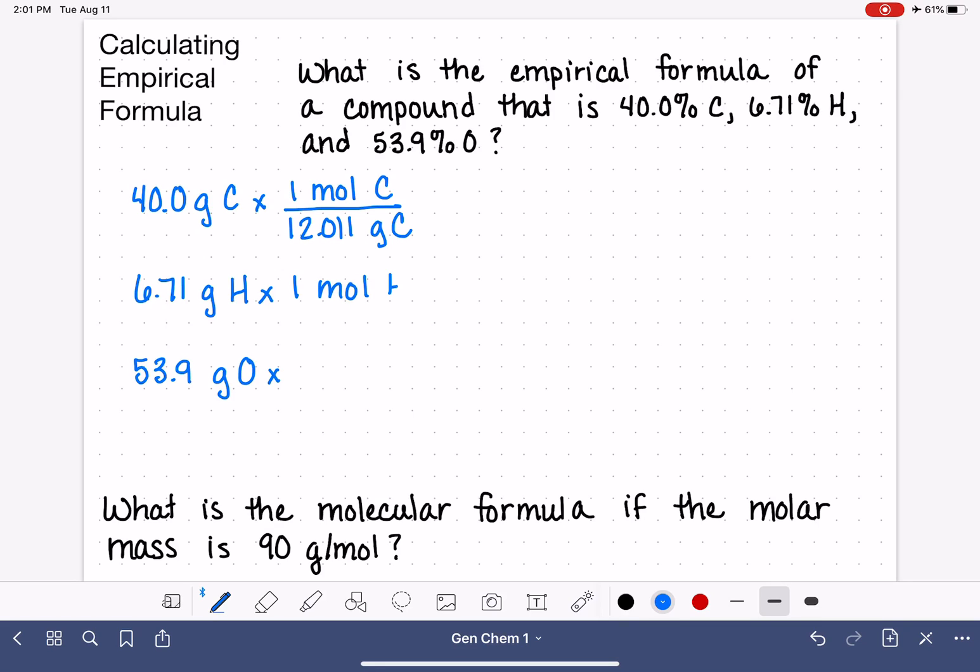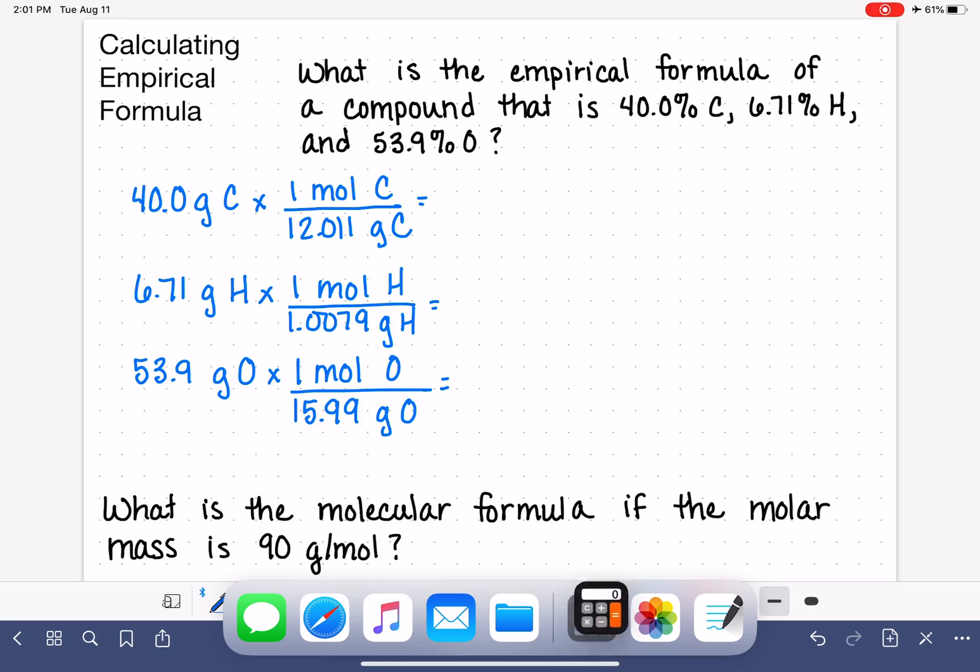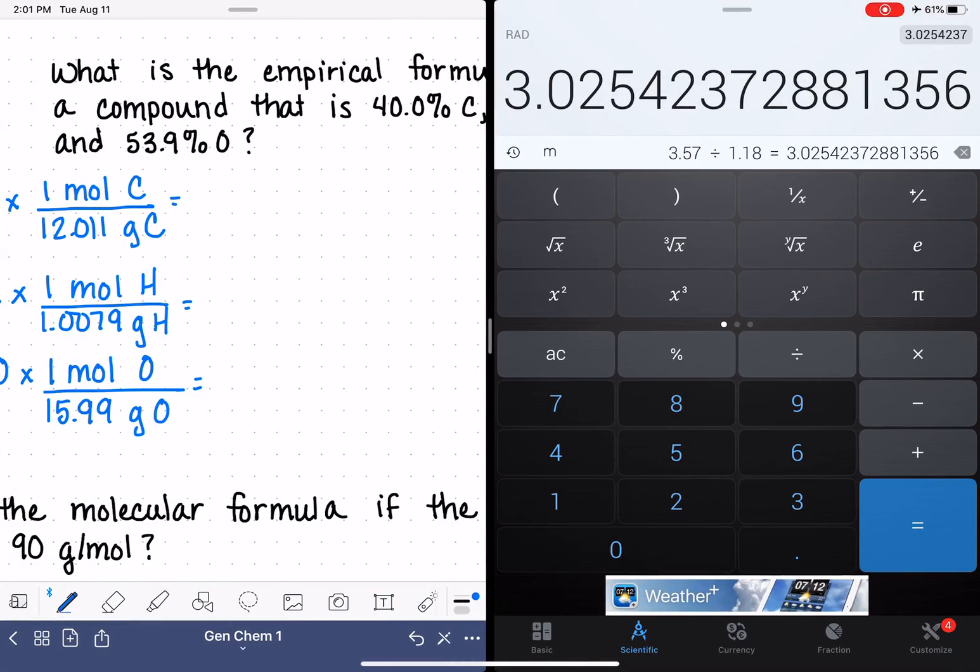One mole of hydrogen is 1.0079 grams of hydrogen, and one mole of oxygen is 15.99 grams of oxygen. Now we are going to calculate how many moles we have of each one of these substances.